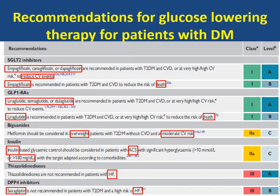Metformin should be considered in overweight patients with type 2 diabetes without cardiovascular disease who are at moderate cardiovascular risk. Insulin-based glycemic control should be considered in patients with acute coronary syndrome with significant hyperglycemia, more than 180 mg per deciliter. Thiazolidinediones and saxagliptin are contraindicated in patients with heart failure.